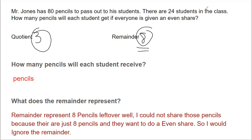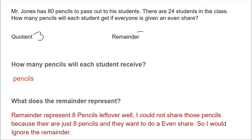Why can't we round the remainder of 8 up to the quotient? Because the question said 'even share' — that's why I underlined that keyword. So we ignore the remainder. The quotient is 3 and the remainder is 8. Each student receives 3 pencils. The remainder represents 8 pencils left over that cannot be shared evenly, so we ignore the remainder.